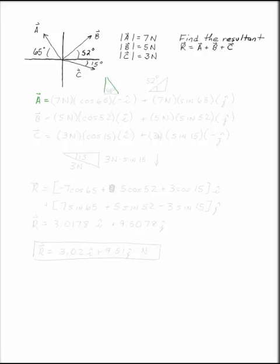So for A, we've got a triangle that looks like this. At 65 degrees, we have 7 newtons times cosine 65 in the negative i direction and 7 newtons times sine 65 in the positive j direction.